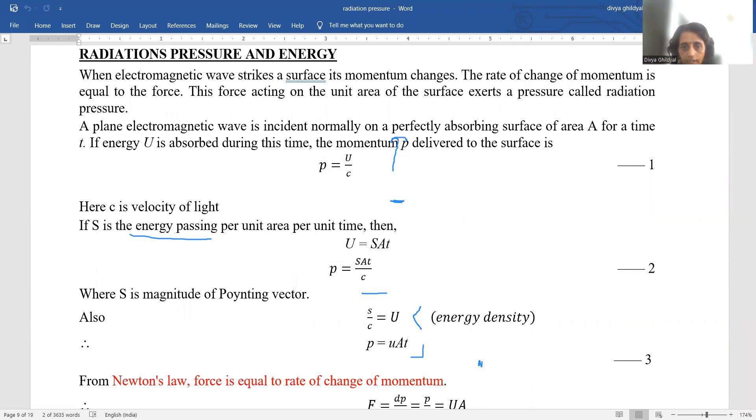If s is energy passing per unit area per unit time then this u equals to s a t. A is your area and t is the time.